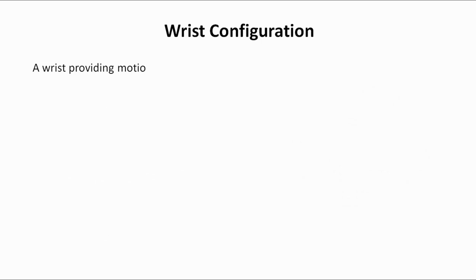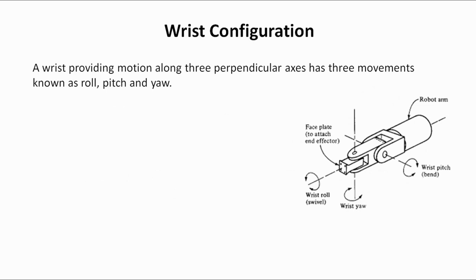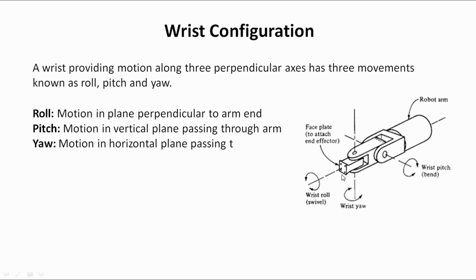The three rotations of the wrist are known as roll, pitch, and yaw. Roll is the motion in a plane perpendicular to the arm end. As shown in the diagram, roll is the rotation about the horizontal axis. Similarly, pitch is the motion in the vertical plane passing through the arm — that is, pitch is the rotation about another horizontal axis, as shown in the diagram.